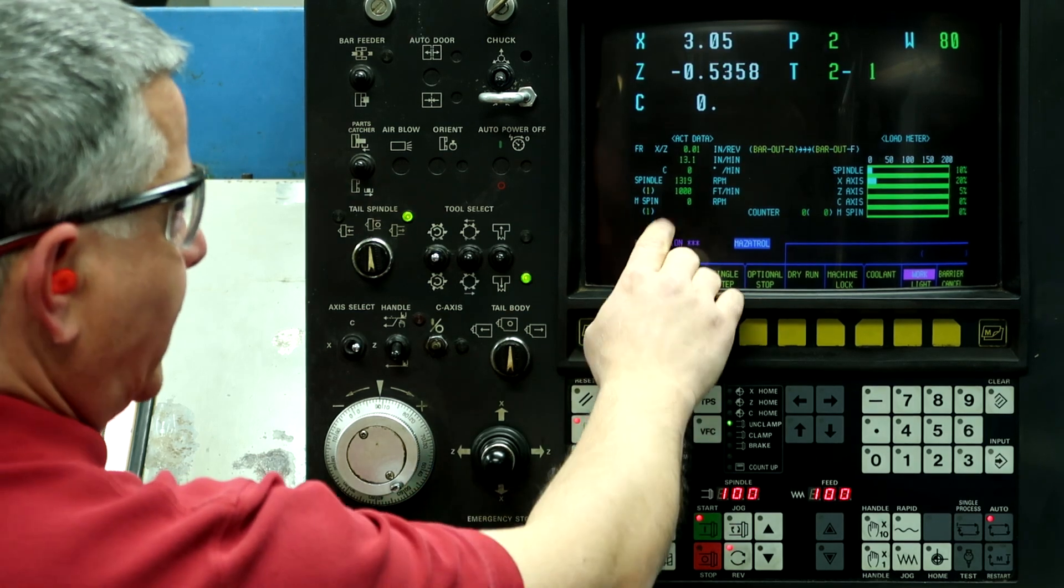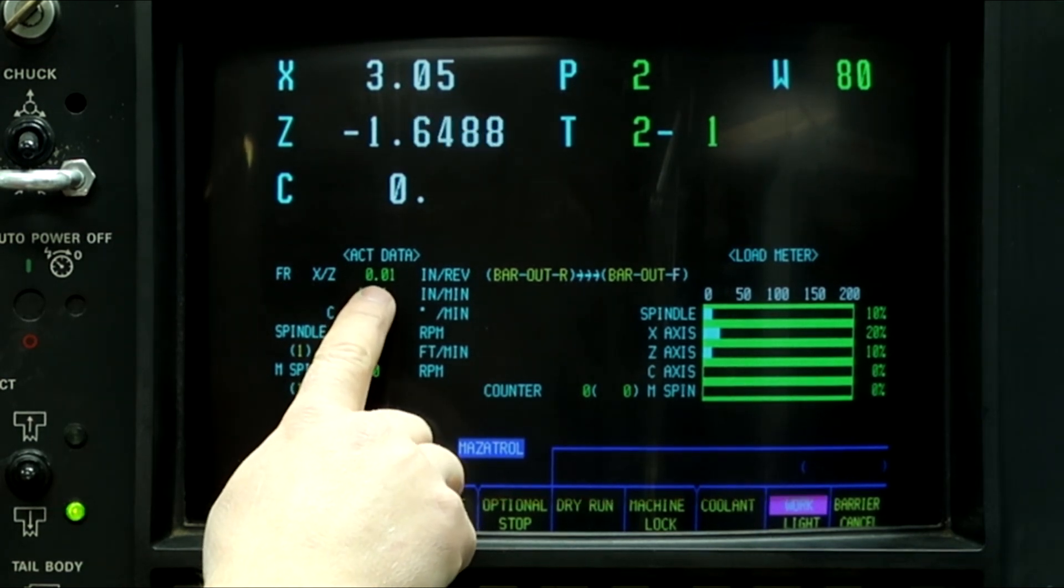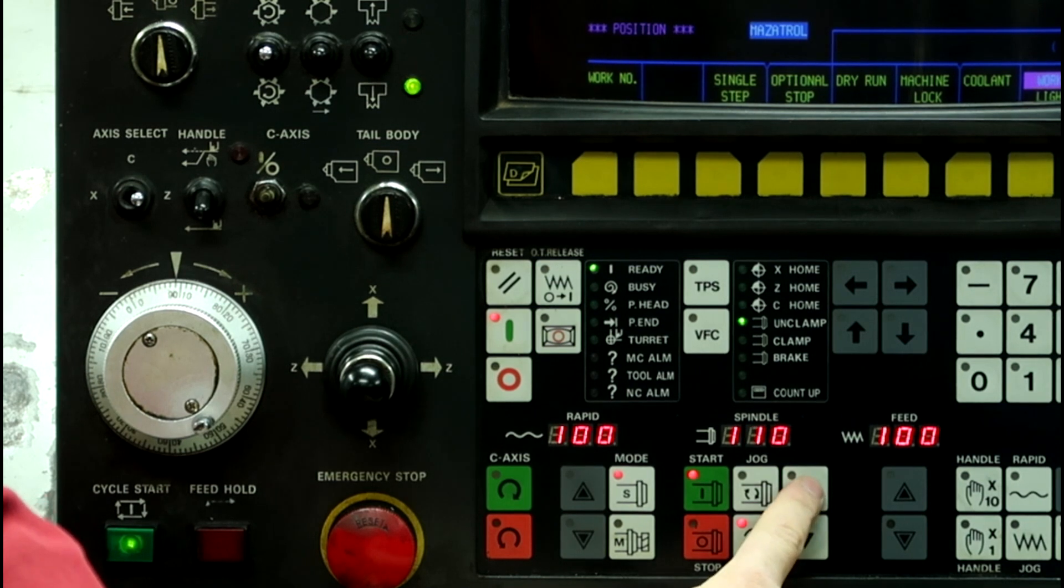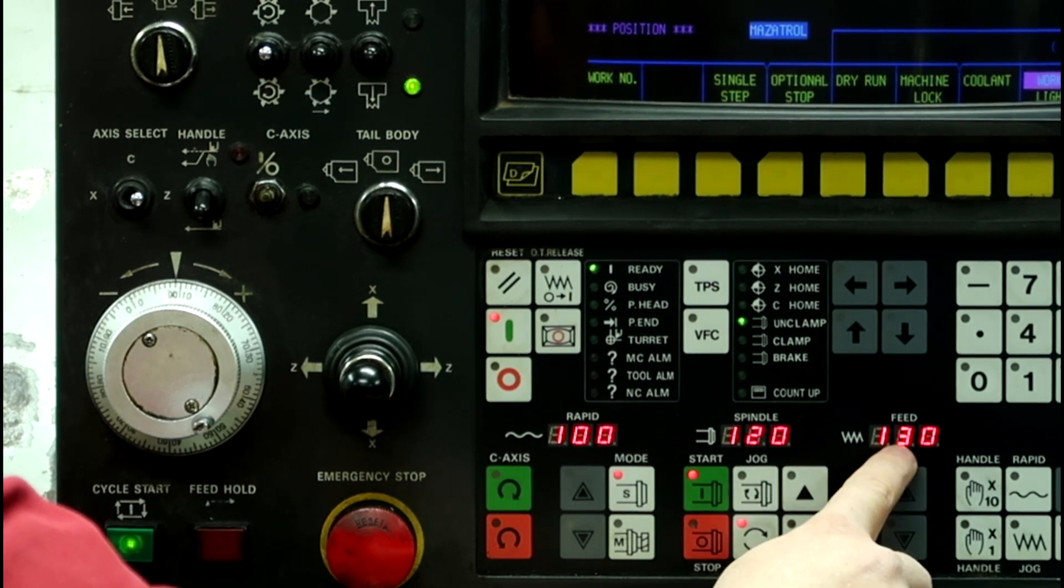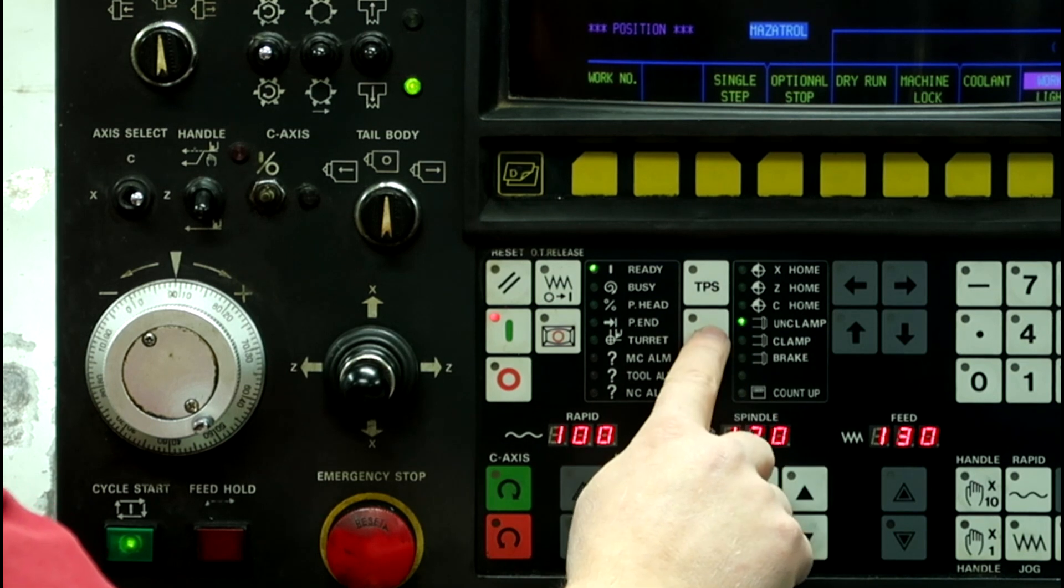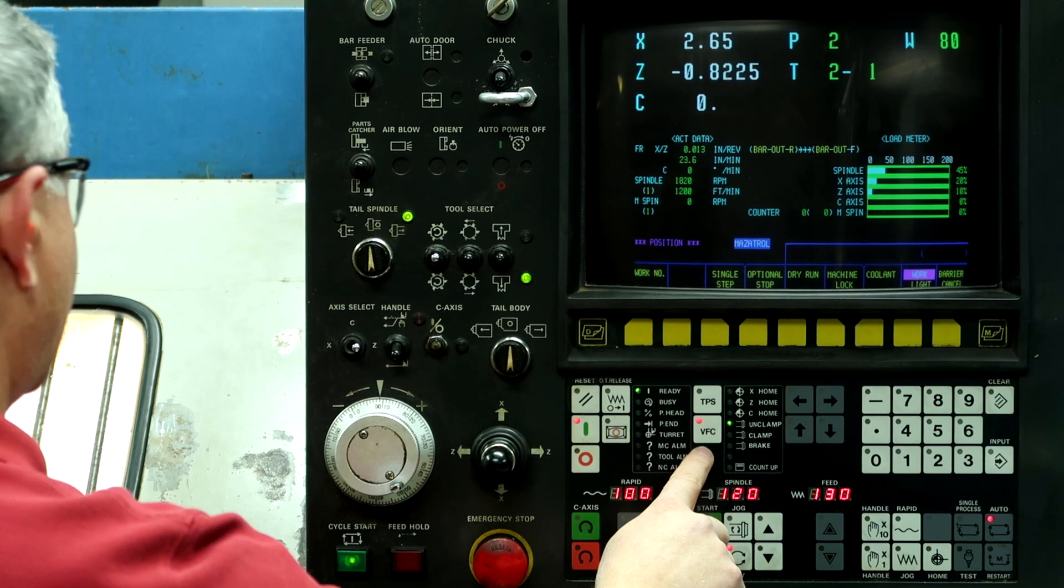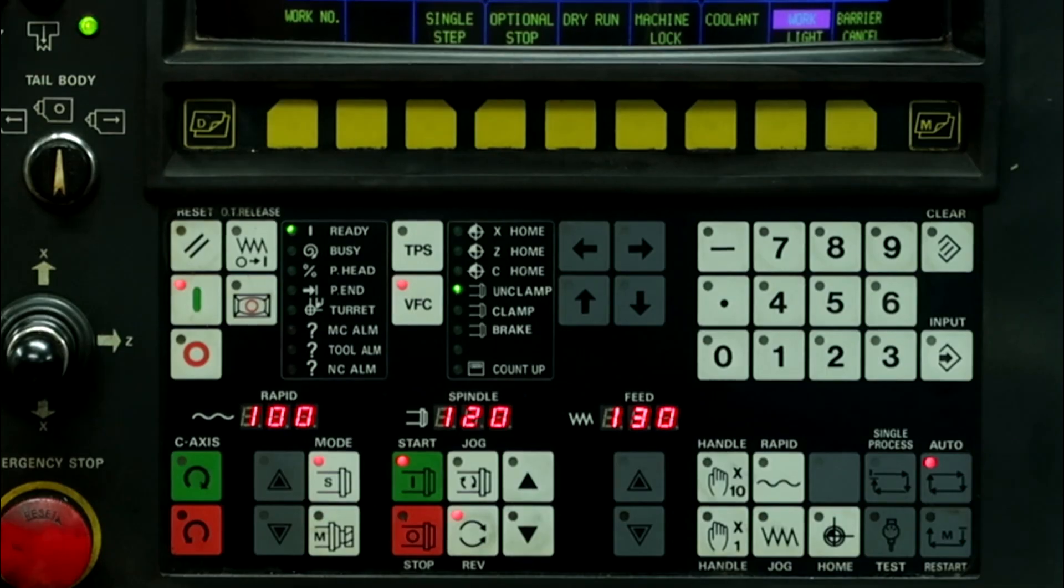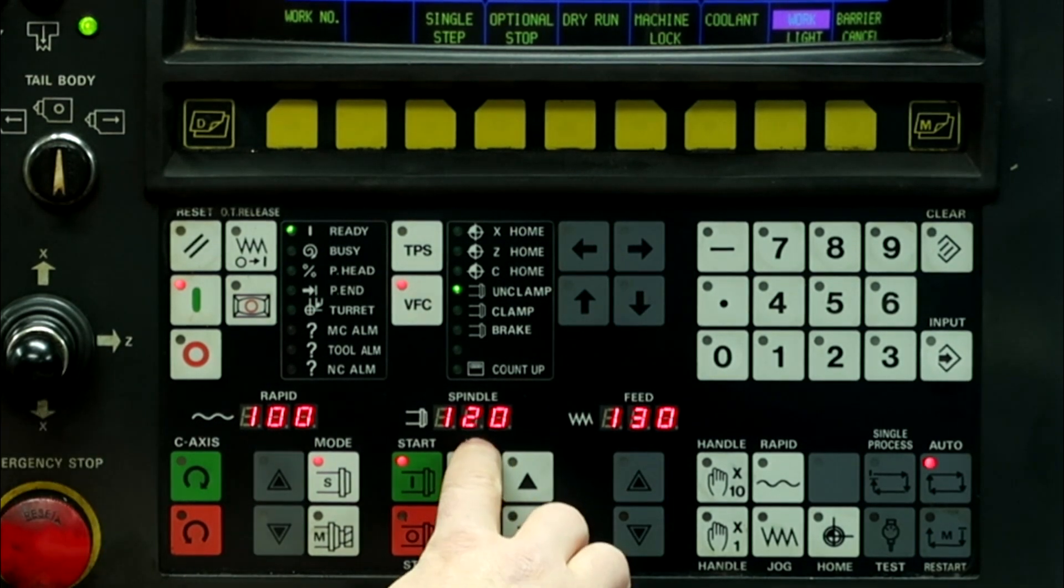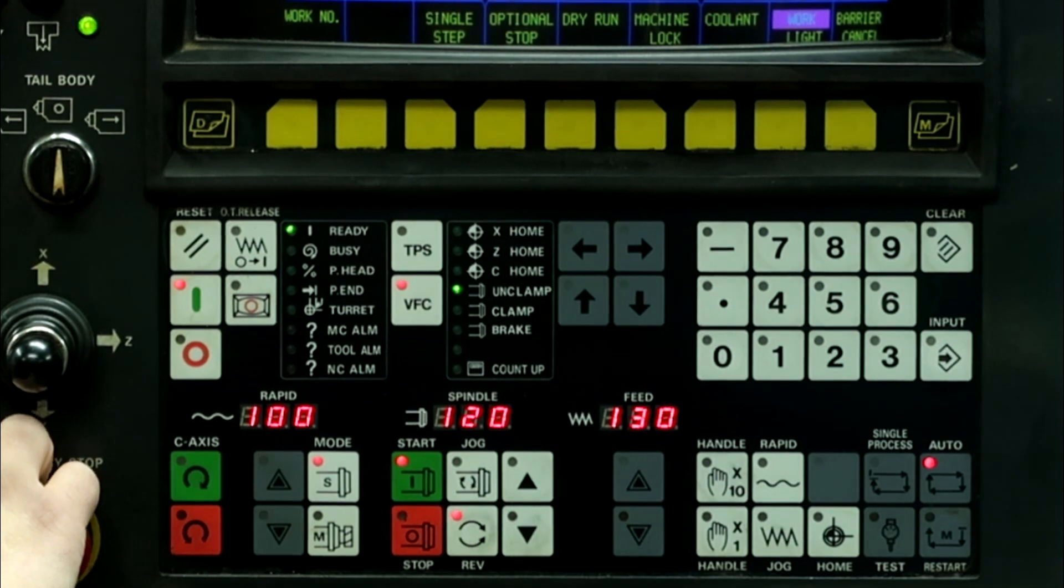So right now, we're at 1,000 surface feet per minute and 10,000th per rev. What I'm going to do is I'm going to increase the spindle speed to 120% and then increase the feed rate to 130% and then push the VFC button and it's going to light up. We're at 120 and 130. And we're almost done roughing the part.